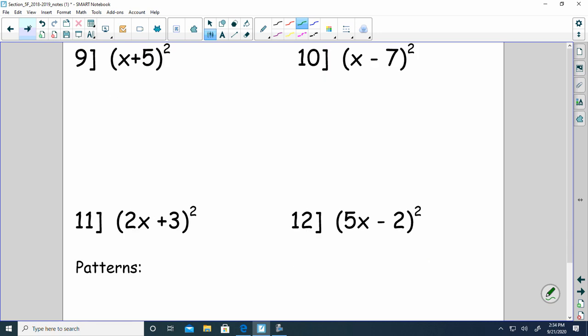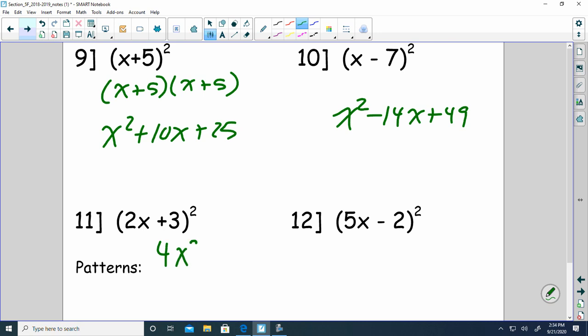When you have this, you have to realize that this is the same thing as this. So x squared plus 10x plus 25. And x squared minus 14x plus 49. So 4x squared plus 12x plus 9. And then 25x squared minus 10x minus 10x minus 20x plus 4.